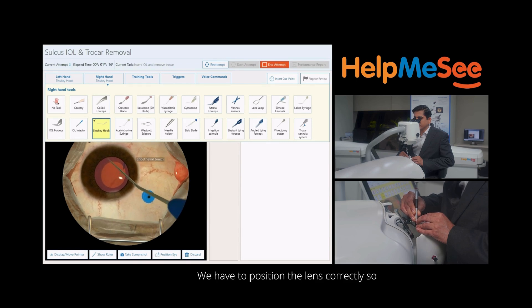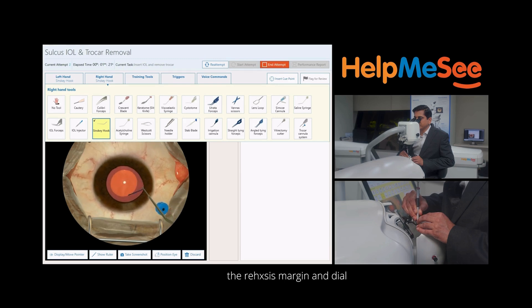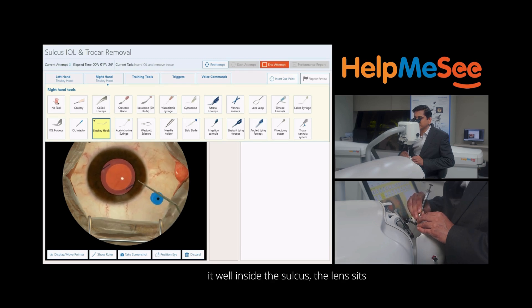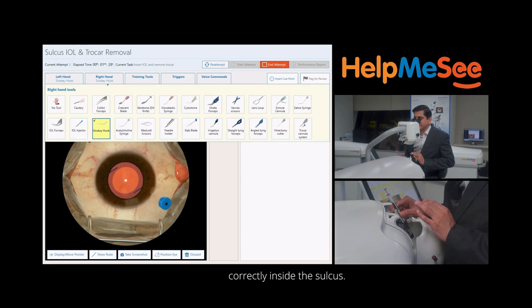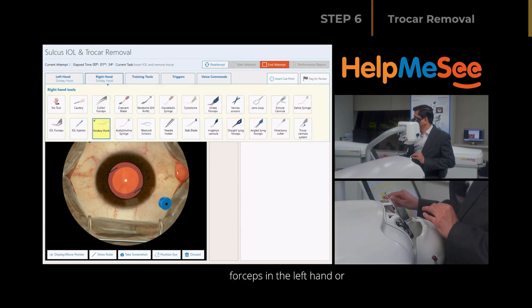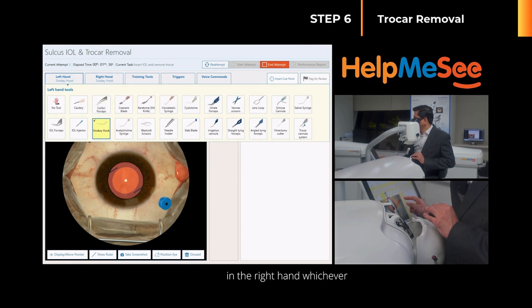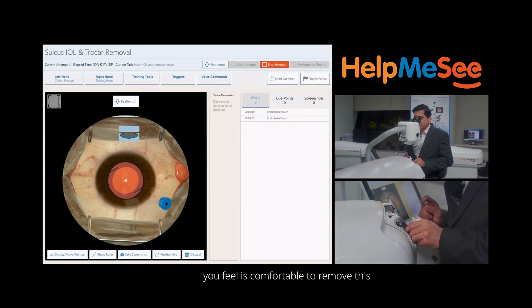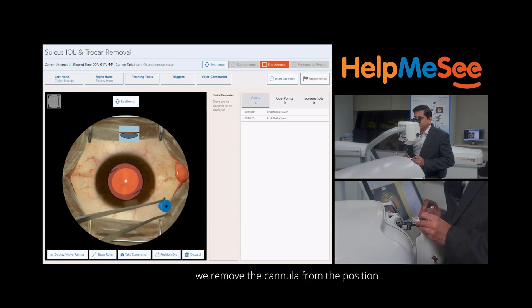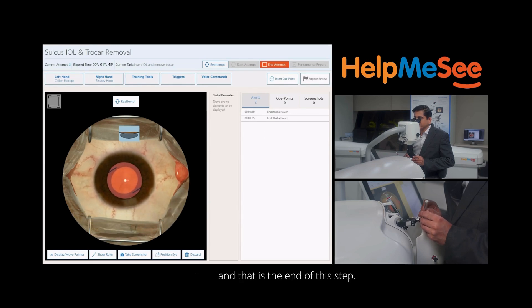We have to position the lens correctly so that it stays over the iris margin and dial it well inside the sulcus. The lens sits correctly inside the sulcus. After this is done we take a colibri forceps in the left hand or in the right hand to remove this cannula and that's the end of the surgical step where we remove the cannula from the position.